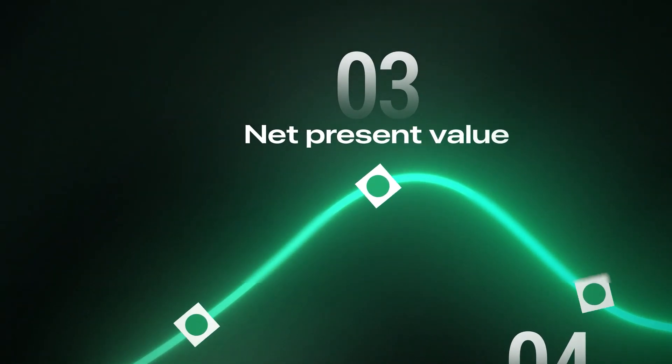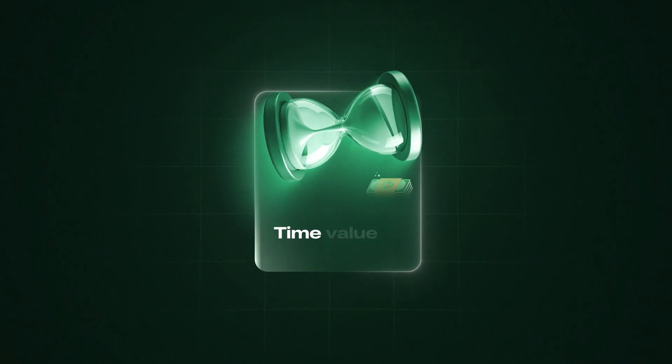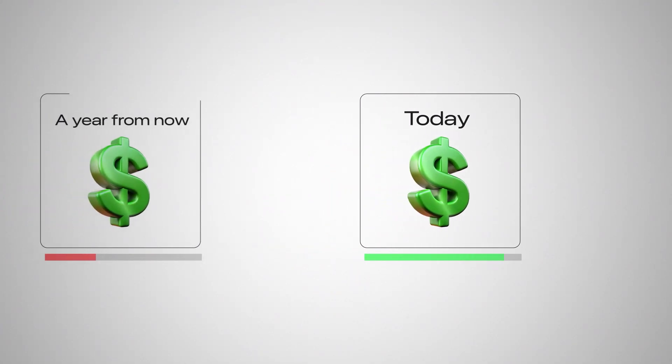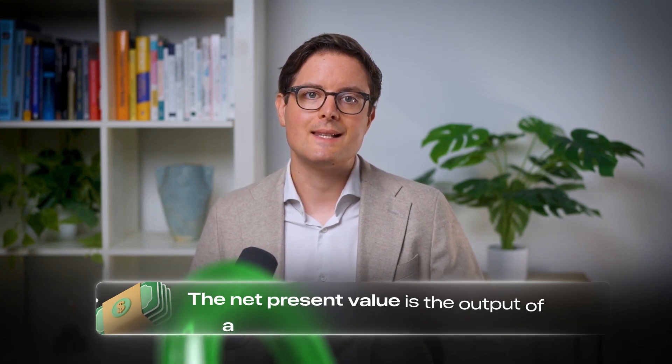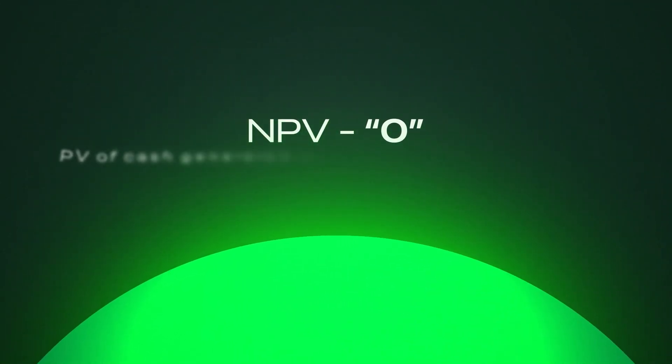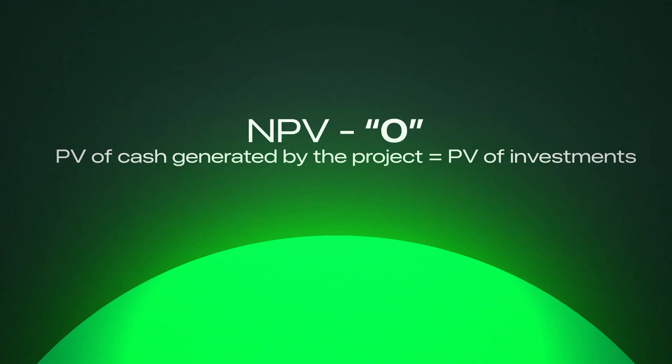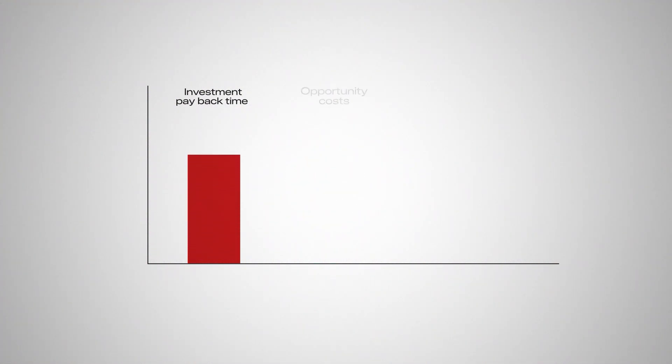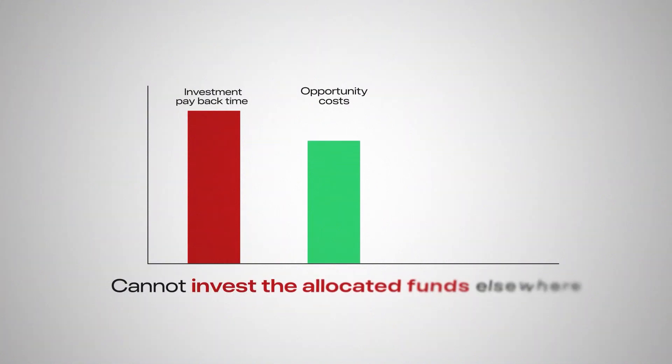Third: Net Present Value. Before we can discuss net present value, we need to understand the concept of the time value of money. In a nutshell, it means that a dollar I receive today is more valuable than a dollar I get in a year from now — because I could take the dollar today, invest it, and it may be worth more than a dollar in a year. The net present value is the output of a discounted cash flow model. An NPV of zero means the present value of cash generated by the project equals the present value of the investments. The longer I have to wait for my investment to pay back, the higher my opportunity costs, because I cannot invest the allocated funds elsewhere. Future cash flows therefore need to be discounted by the rate of return we could reasonably expect from an alternative investment.